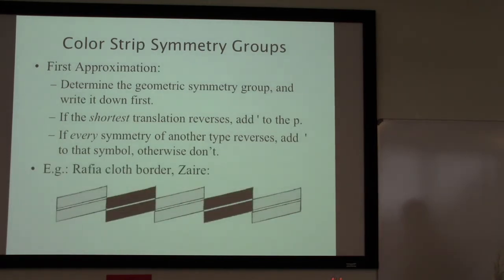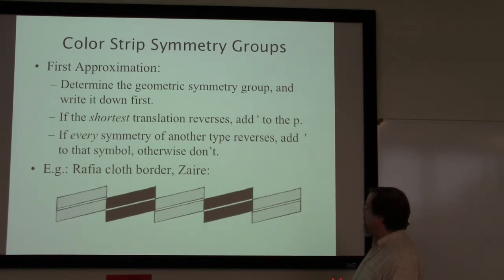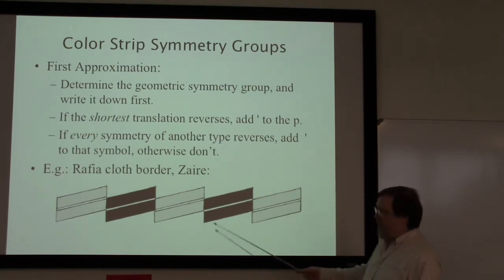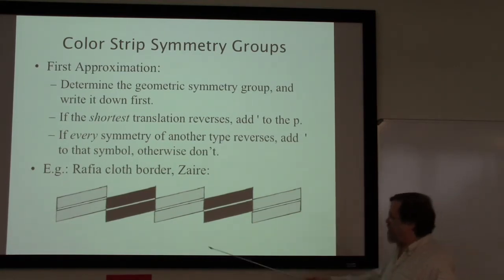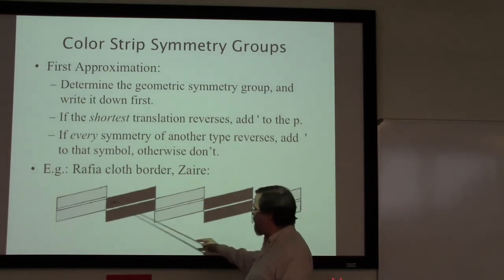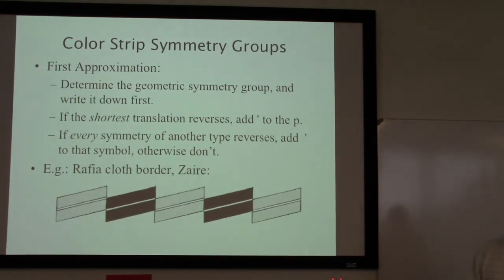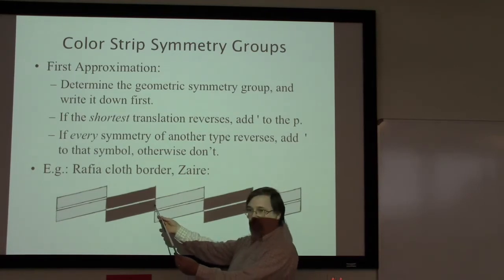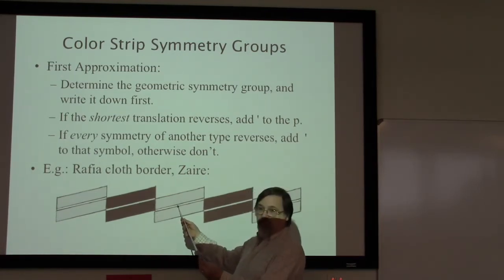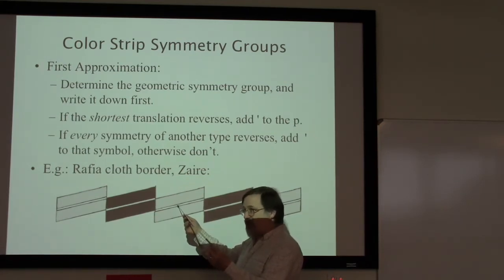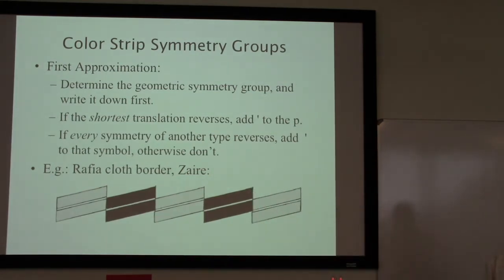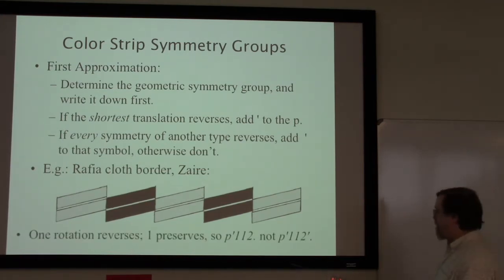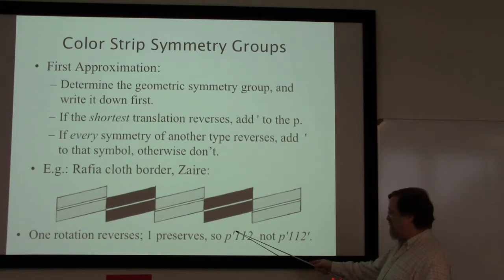Here is a border of some raffia cloth from Zaire — the Democratic Republic of the Congo as it's called now. In this case we have a translation that reverses colors: this pair of gray goes to black and then to gray. There are some rotation points: this one reverses colors but the rotation point here preserves colors. So the rotation does not get a prime. Our final group will be p prime — the translation does reverse — but we do not put a prime on the two because we found a rotation that did not reverse colors.